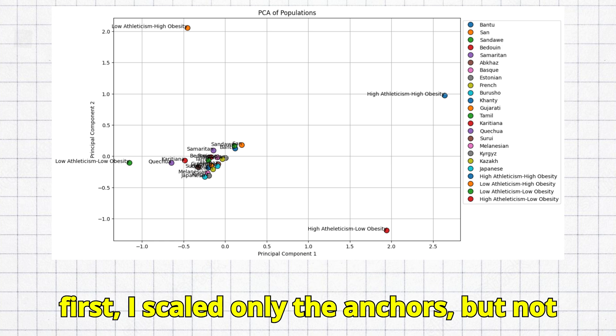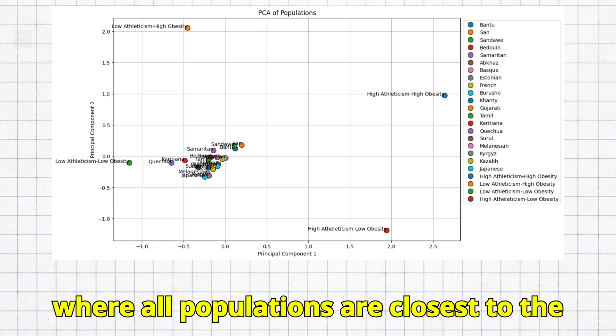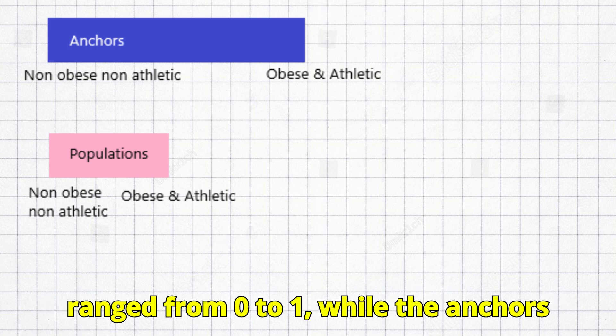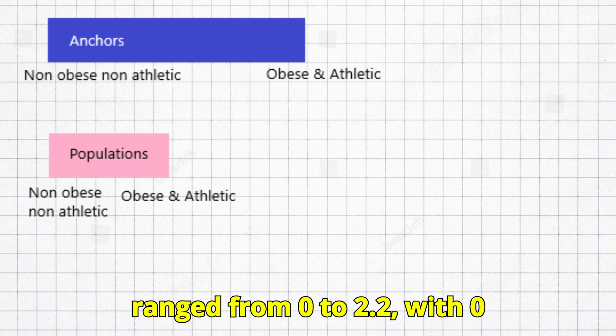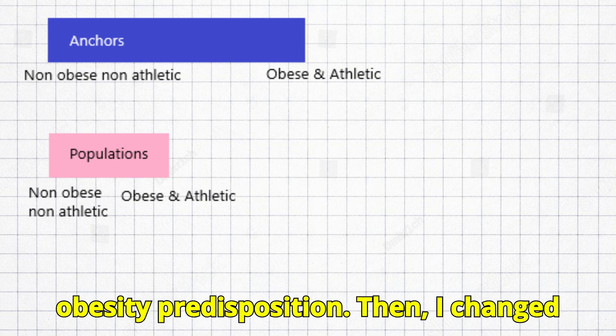At first, I scaled only the anchors, but not the populations. This resulted in a chart where all populations are closest to the non-obese non-athletic anchor. This happened because the allele frequencies ranged from 0 to 1, while the anchors ranged from 0 to 2.2, with 0 representing low athleticism and low obesity predisposition.